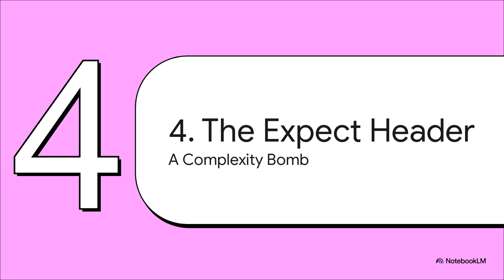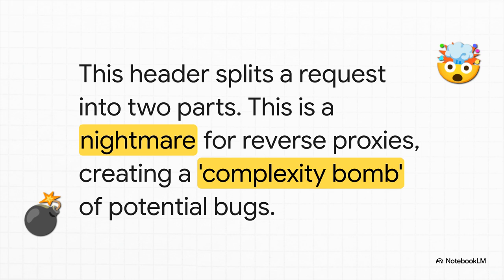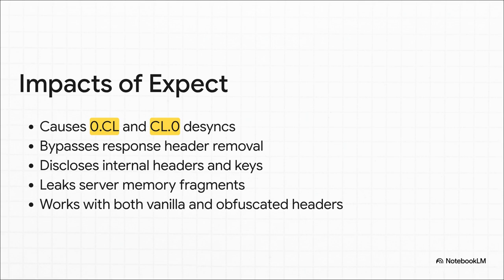There's an even more powerful attack vector: an ancient header that is basically a ticking time bomb for pretty much any modern layered web architecture — the Expect: 100-continue header. The idea was simple: a client sends its headers, waits for the server to say 100 continue, then sends the big request body. But this two-step dance is a total nightmare for proxies. What if the front end doesn't support it? What if the back end sends something other than a 100? The result is pure chaos and a fantastic opportunity for desync. A plain Expect header can cause a 0.CL desync — we saw it at T-Mobile. On Netlify it could even cause a CL.0. Add a tab character for obfuscation and you can hit targets like GitLab and Akamai. It even lets you bypass security headers or leak server memory.